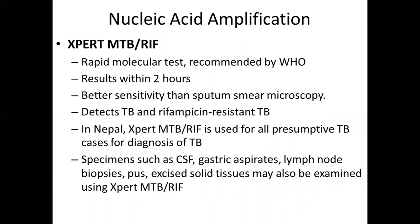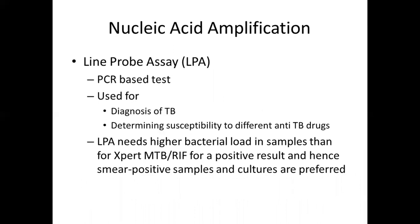Moving on to nucleic acid amplification tests: these consist of the GeneXpert and the LiPA (line probe assay). GeneXpert is a rapid molecular test recommended by the WHO and results come within two hours. It has better sensitivity than sputum smear microscopy, so every suspected case of tuberculosis should undergo GeneXpert testing. Other specimens such as cerebrospinal fluid, gastric aspirates, or lymph node biopsies can also be processed through the GeneXpert test. The LiPA is a PCR-based test used for diagnosis of TB and to determine susceptibility to different TB drugs; however, since it requires higher bacterial loads, it is only done if the patient has a positive GeneXpert result.